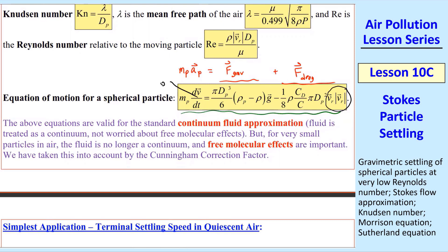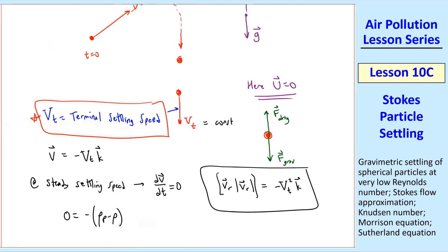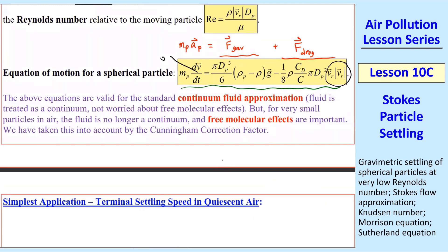we get 0 equal negative rho p minus rho g plus 3 fourths rho cd over c, 1 over dp, vt squared. And that's after a little bit of math. You can see that when the left side is 0,